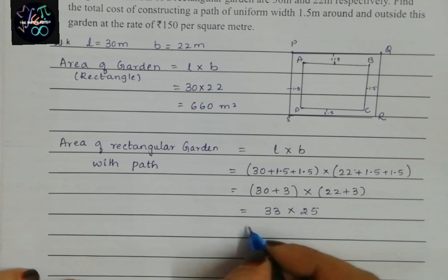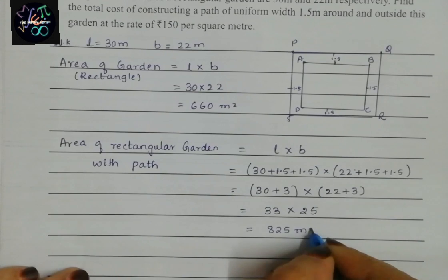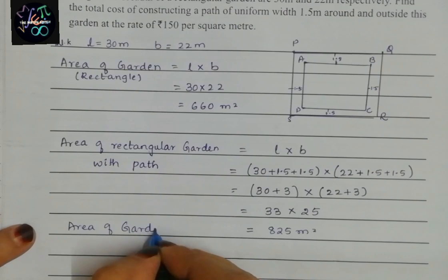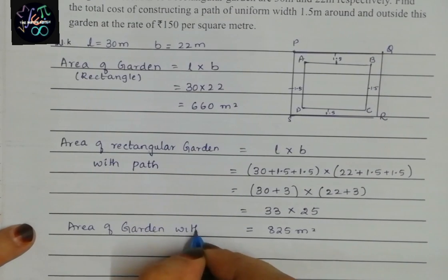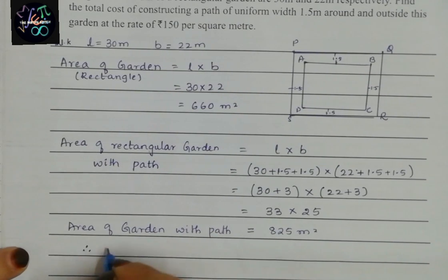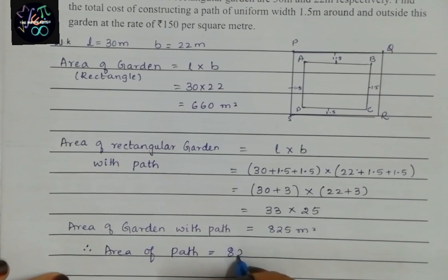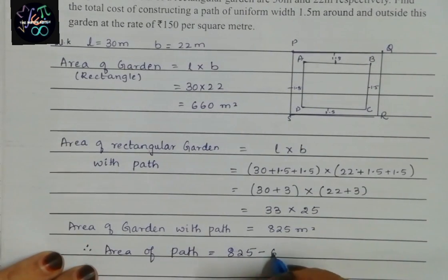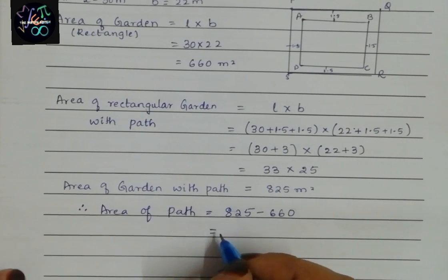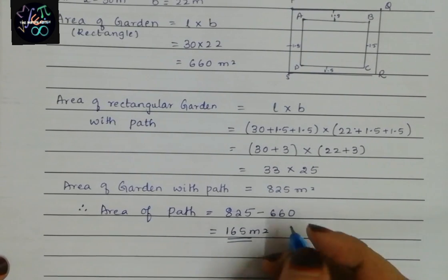So area of garden with path = 33 × 25 = 825 square meters. Therefore, area of path = 825 minus 660 = 165 square meters. This is our area of the path.